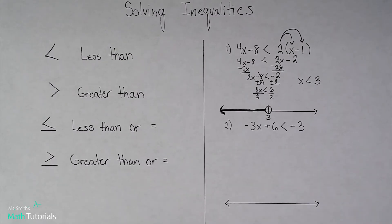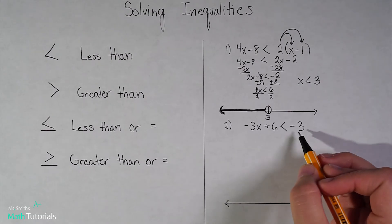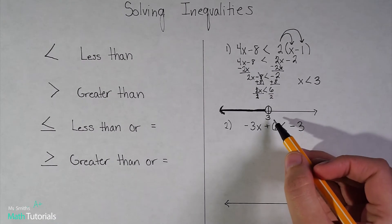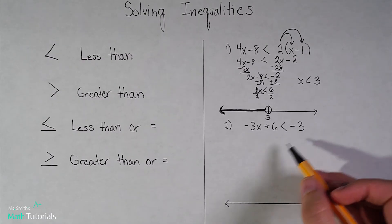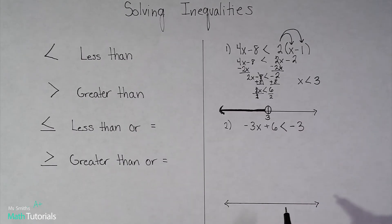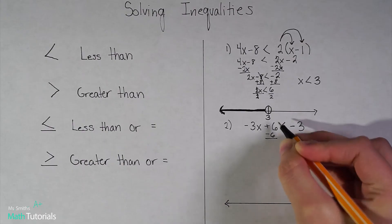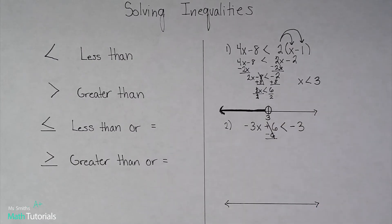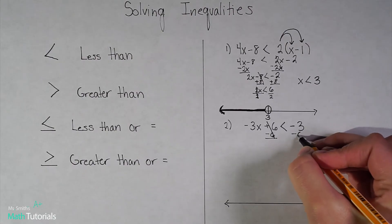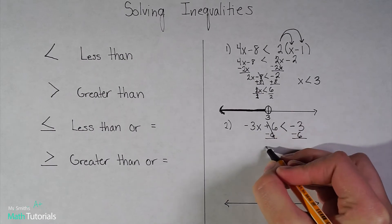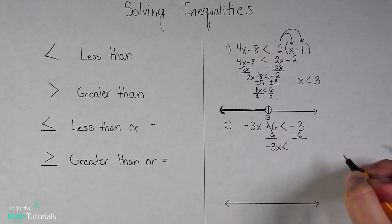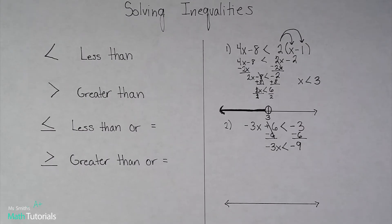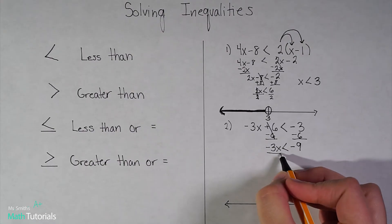Let's look at example number two. I've got negative 3x plus 6 is less than negative 3. My goal is to get all constants to the right and variables to the left. My variable is already on the left, so I just need to move the 6. I do the inverse operation — this is plus 6, so I minus 6. Those cancel out to 0. What I do to one side I have to do to the other. So negative 3x is less than negative 3 minus 6, which gives me negative 9. Now I need to divide by negative 3 to isolate x.